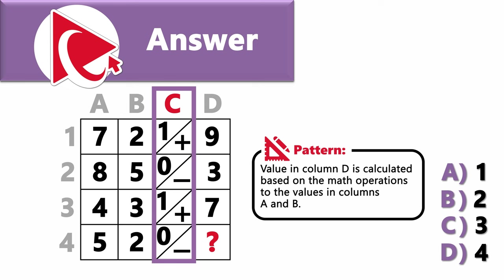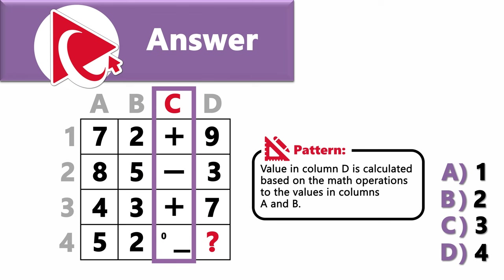Let's look at an example. To make it easy, let's substitute the numbers in column C with math operations. The operation for row 1 would be plus (addition), row 2 would be minus (subtraction), row 3 is plus again, and row 4 is minus.